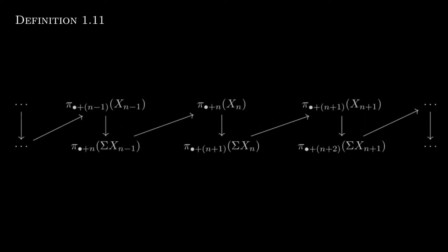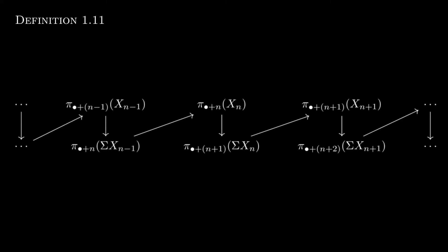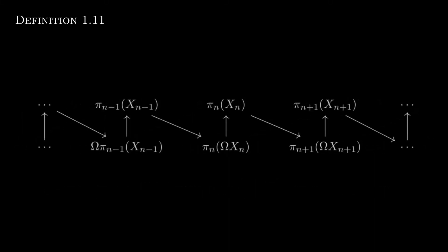This would lead us to believe that we get the same co-limit whether we use sequential spectra with the standard structure maps or the adjunct structure maps. This will be our next proposition.